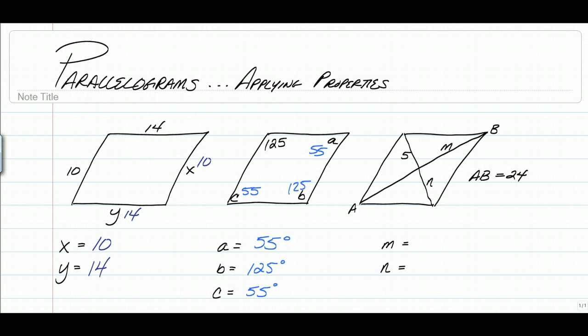Last one in this row applies the diagonals property. So we have to look at our given AB is 24. Don't forget about that. And we're going to find M and N, knowing that the diagonals cut each other in halves. So if this little piece is 5, N is also 5. But AB was given as 24, which means if we cut that in half, we would have 12 and 12. So M is 12 and N is 5.